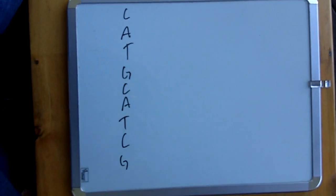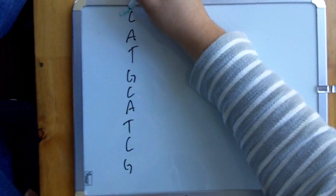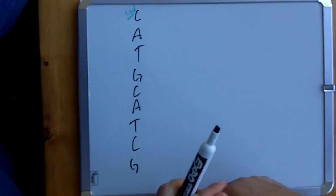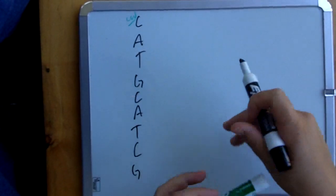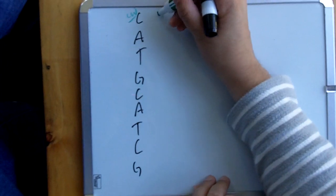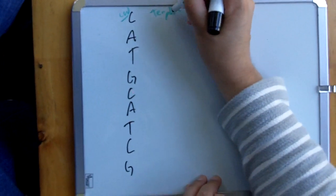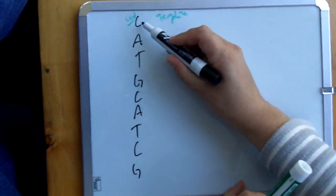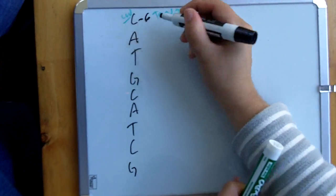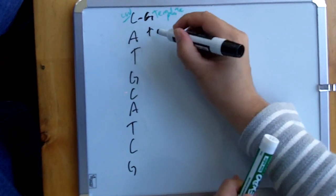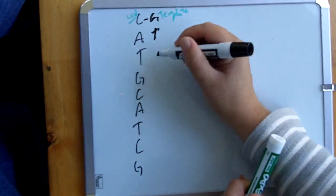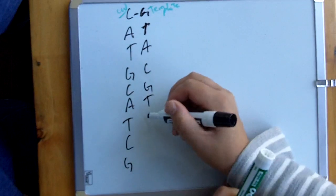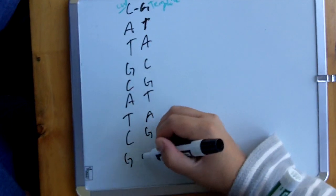I'm going to label that right here — C, O, D to represent coding strand. And then we have to have what we call a complementary strand, which we're going to produce — called the template strand. So we know C binds with G, A binds with T, T binds with A, G with C, C with G, A with T, T with A, C with G, G with C.